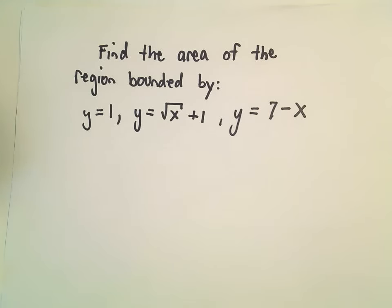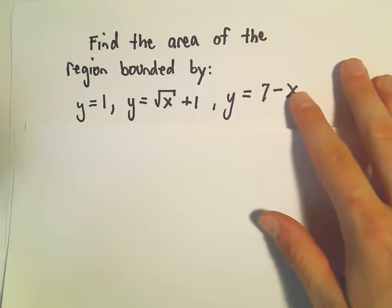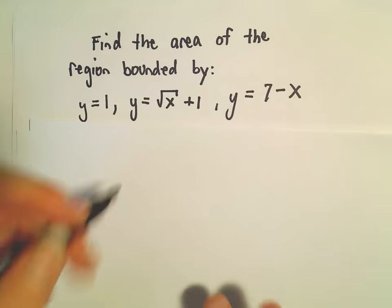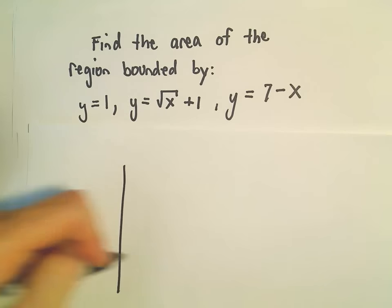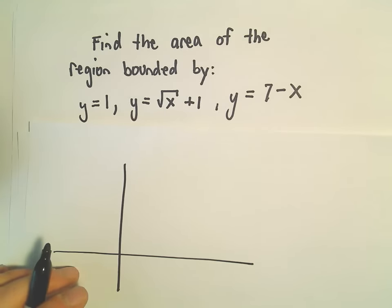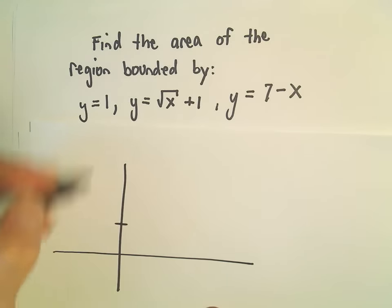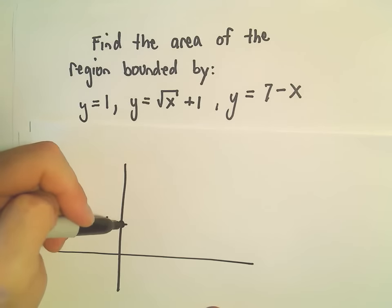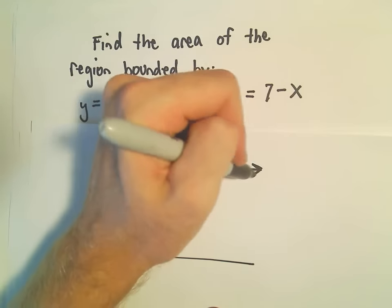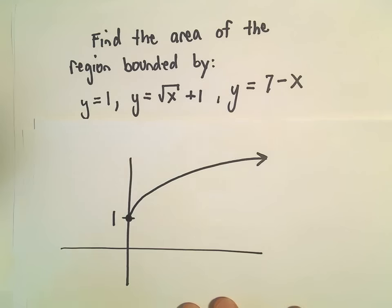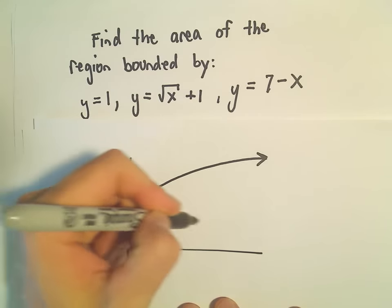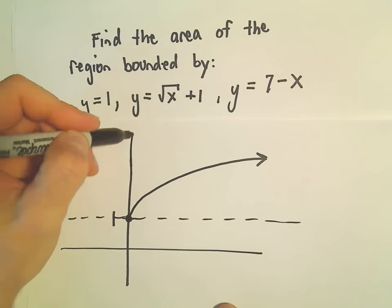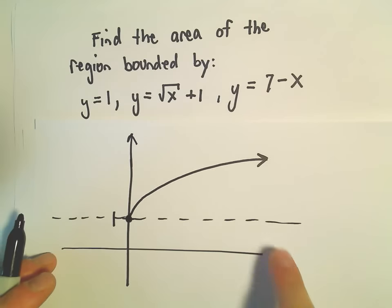Usually to get started on these, I always like to try to, if they seem like relatively manageable functions, I like to try to get a decent little graph. So let's see, I'm going to graph square root of x plus 1, so square root of x plus 1 would just be the square root function moved up one unit. y equals 1, well, that's just going to be a horizontal line.